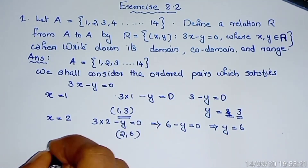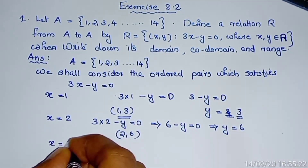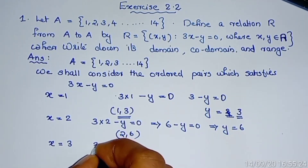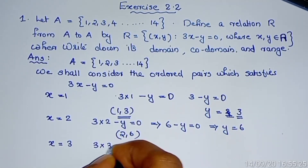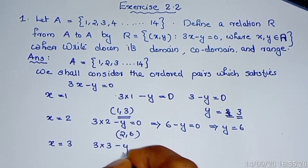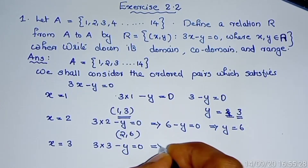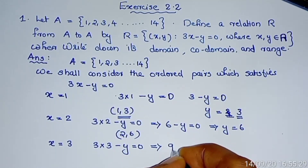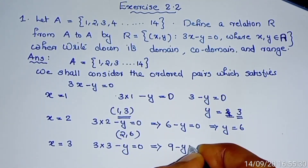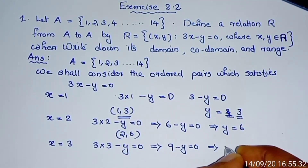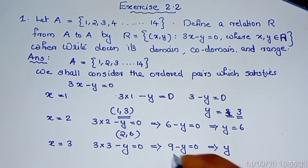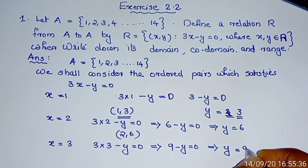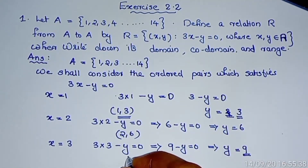When x equals 3: 3 times 3 minus y equals 0, implies y equals 9. So y takes the value 9. The third ordered pair is (3, 9).